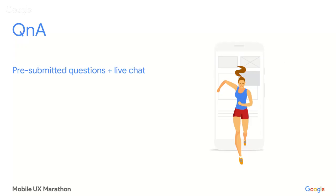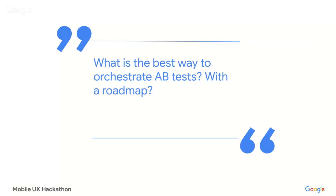Thanks so much Maya — really great to see the live demo on setting up a test in Optimize and how easy it is to integrate with Google Analytics. The success stories were super inspiring. Moving on to Q&A. The first pre-submitted question: what is the best way to orchestrate A-B tests — is it with a roadmap or is there another way?